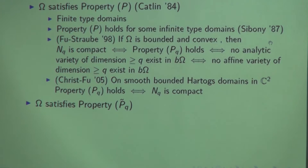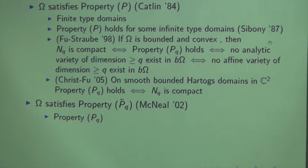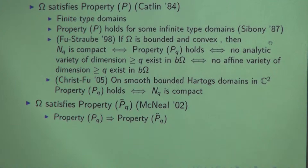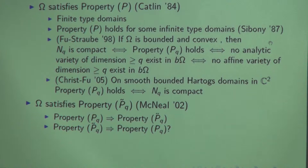The next sufficient condition was due to Jeffrey McNeal, who introduced a variant of property P — property P_Q-tilde — in 2002. He also showed that property P_Q implies property P_Q-tilde: if a domain satisfies property P_Q, it must satisfy property P_Q-tilde, since exponentiating and scaling a function for property P gives a function for property P-tilde. But to my knowledge, the inverse implication is not known — so this is open in general. Whenever we have equivalence between property P_Q and compactness of N_Q, we also have equivalence with P_Q-tilde, but in general we don't know an example separating them.